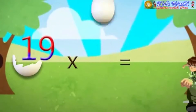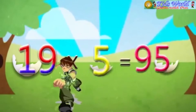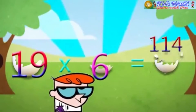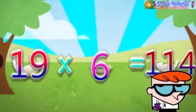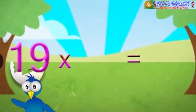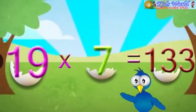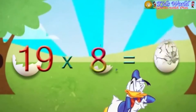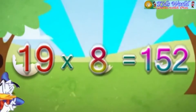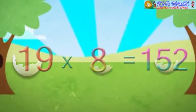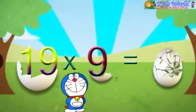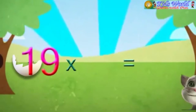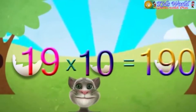19 into 5 is equal to 95. 19 into 6 is equal to 114. 19 into 7 is equal to 133. 19 into 8 is equal to 152. 19 into 9 is equal to 171. 19 into 10 is equal to 190.